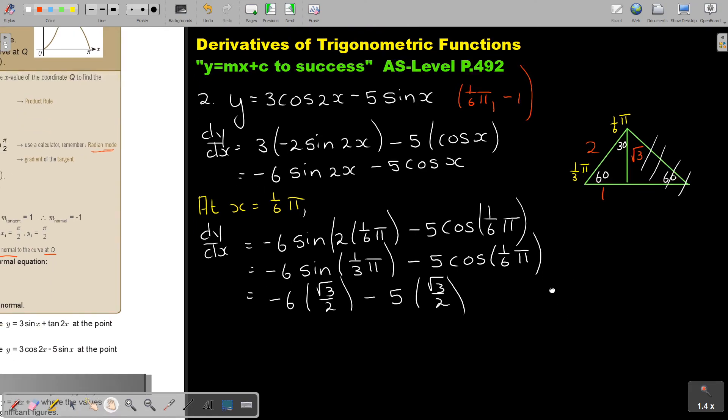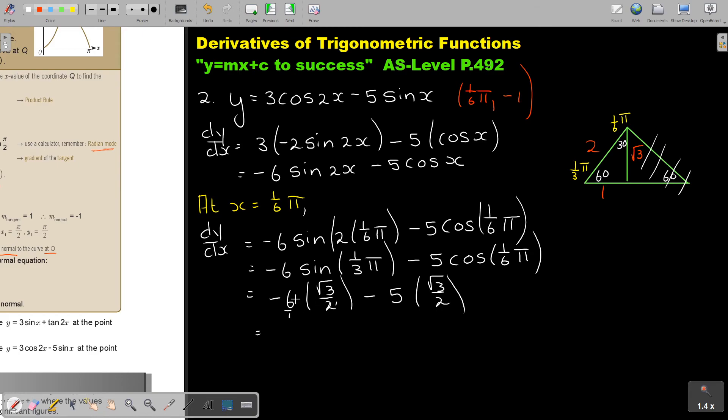Now it's just simplifying. If this is over 1, it goes in 3. So, it will be negative 3 square root 3 minus 5 square root 3. The denominators are the same. So, I'm ending up with negative 6 square root 3 over 2 minus 5 square root 3 over 2. Negative 6, negative 5.